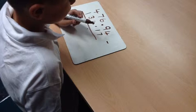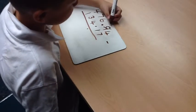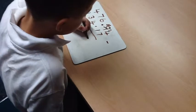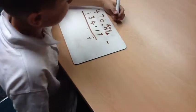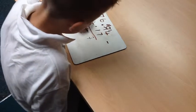7 from 4 you can't do, so we've got to exchange. Now we've got 7 from 14, which is 7. Now we've got to take away 1 from 8, which is 7.